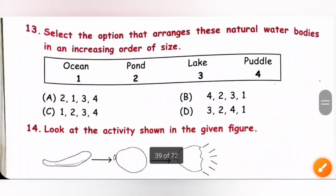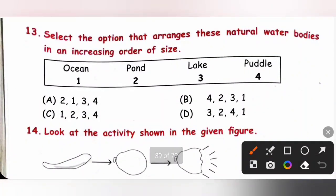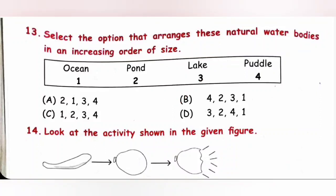Question 13: Arrange natural water bodies in increasing order of size. The order is: puddle, pond, lake, ocean. So the sequence is 4, 2, 3, 1. Option B is the correct answer.